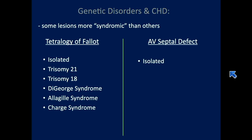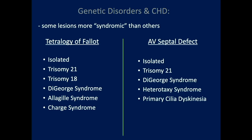Similar to AV septal defect — which absolutely can be isolated — a good rule of thumb is that if you see one on an ultrasound, your immediate risk of Down syndrome is about 50%. Trisomy 21 and various other syndromes are associated.